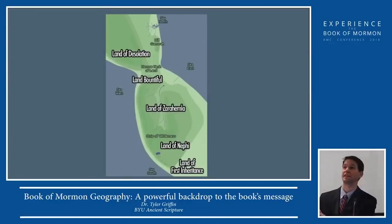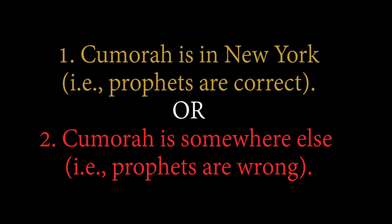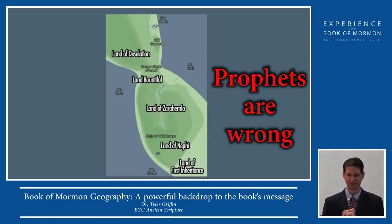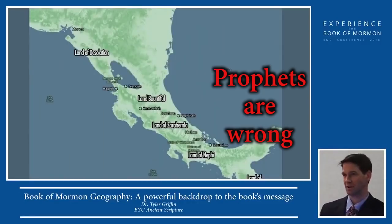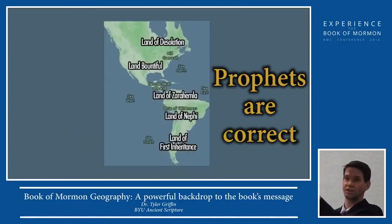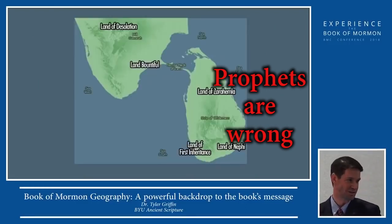Keep in mind, there are dozens and dozens of models — external models — about where the Book of Mormon took place. In the Americas, obviously, you've got the Peruvian, the Bolivian, and the Chilean. You've got the Panama, the Nicaragua, the Honduras, the Costa Rica. You've got eight in Mesoamerica, at least. You've got Baja. You've got the two-continent model. You've got a couple of variations in the heartland of America. But we've even got models over in Malaysia. We've got the Sri Lankan model. And I think the newest model on the scene is the African model.